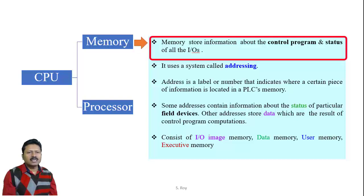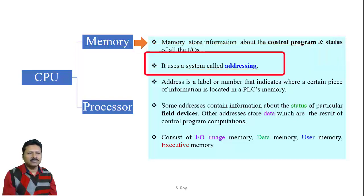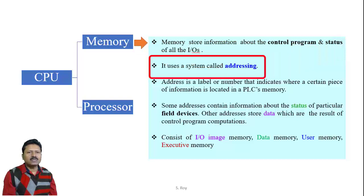Memory in PLC stores information about different control programs and the status of all input and output devices. Status means whether the input devices are logic 1 or logic 0, and whether the output field devices will be activated or not. For this purpose, memory uses an addressing system — the status of every field device is stored at a particular address in memory, which indicates the specific field device, whether it is an input or output device.